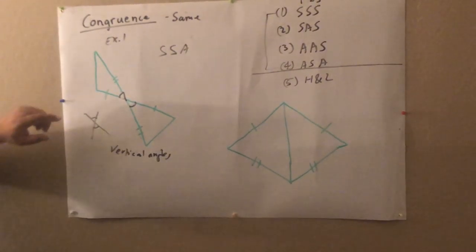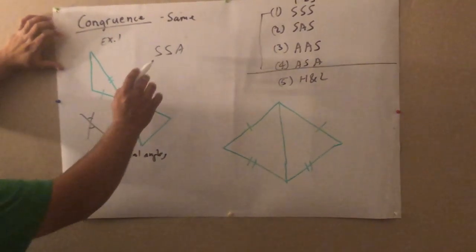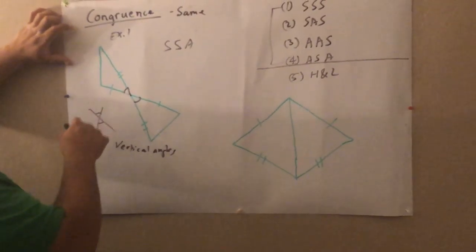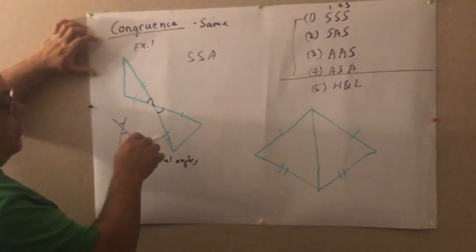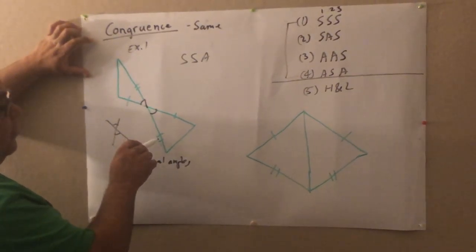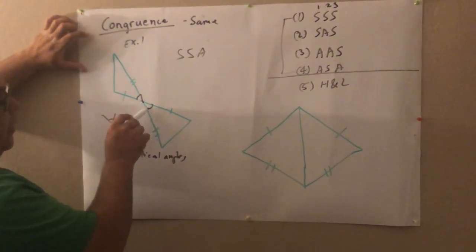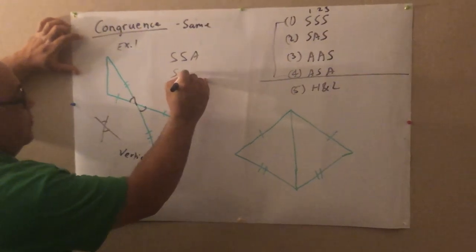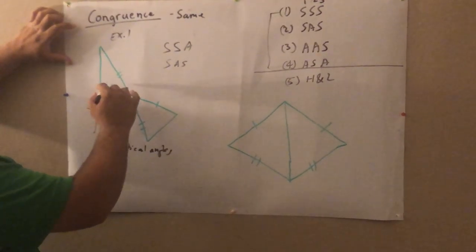So I can say, and it's not SSA. You have to go in order. You can pick any spot in the triangle and kind of go in order. So I have to go, if I go here, I've got side, angle, side. Side, angle, side. I have to go with the three things in order.